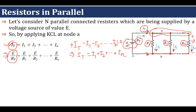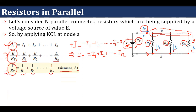I1 equals the voltage E across resistor R1 divided by R1, so I1 = E/R1. Similarly, I2 = E/R2 and In = E/Rn. All the E terms cancel out, leaving 1/RT = 1/R1 + 1/R2 + … + 1/Rn, with units of Siemens — the reciprocal of resistance, also called Mho, just the reverse of Ohm.